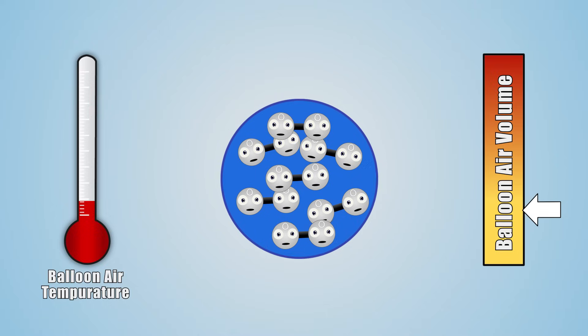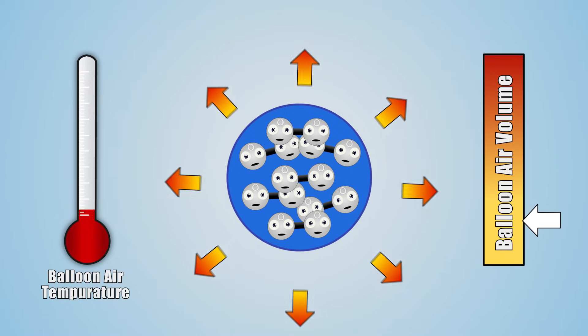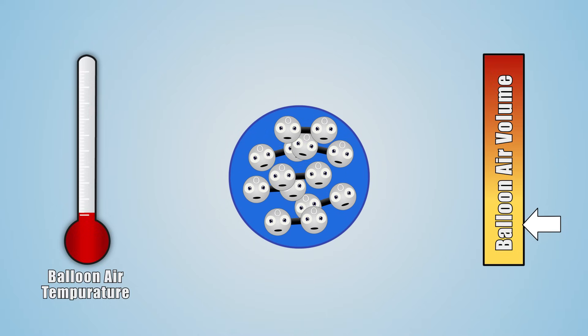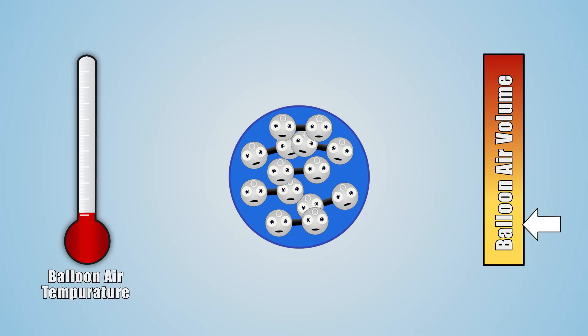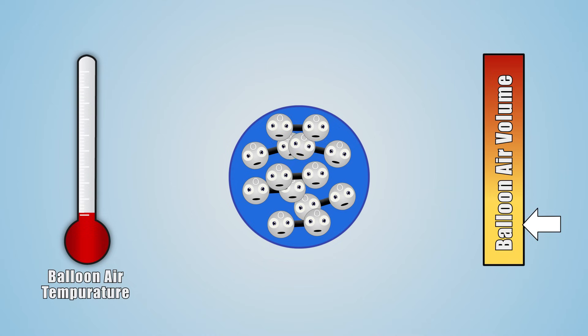The colder the air molecules get, the closer together they will be. If the temperature of a gas is lowered low enough, it will go through a change in state from a gas into a liquid.